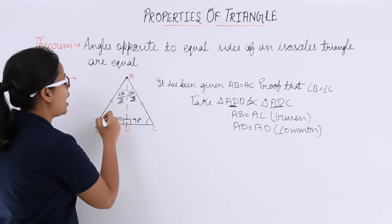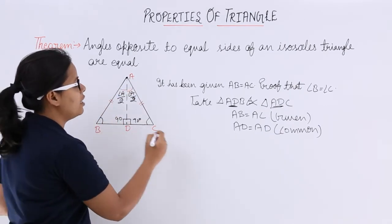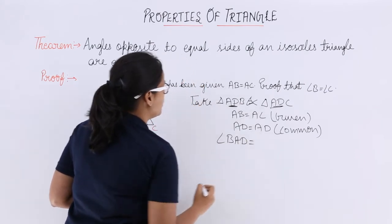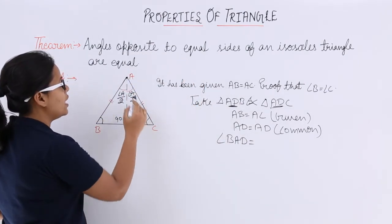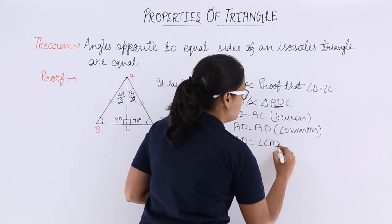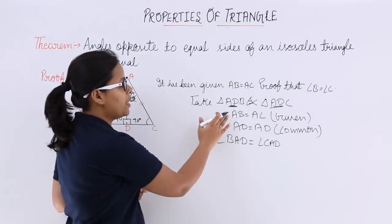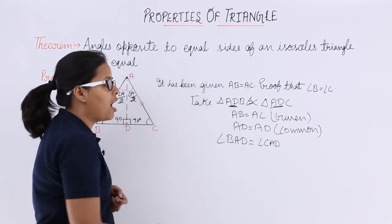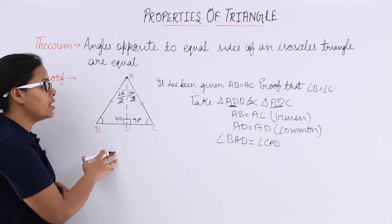Which suggests that angle BAD is equal to angle CAD. So when these two sides are equal and their included angle is equal, what can you say?